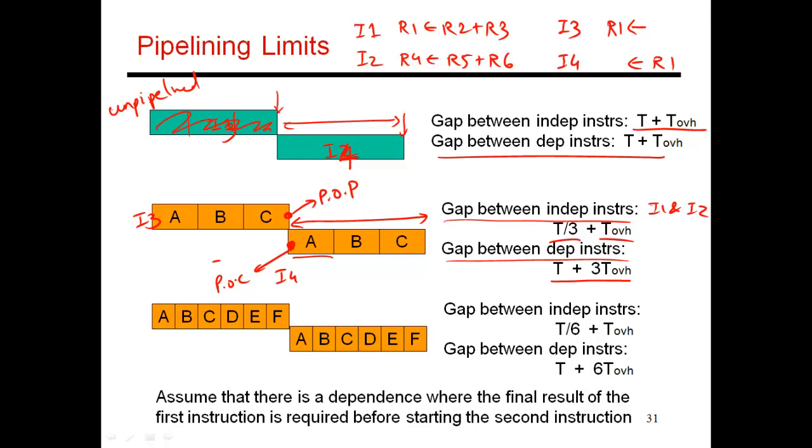becomes T plus 3 times T overhead. That is, you have to do all of the circuit work, plus you have to go through the latch overhead of each of these three stages. So in this case, I assume that the point of production happens at the very end of an instruction, and the point of consumption happens at the very start. If you were to change this, if this was the point of production and this was the point of consumption, you would have a different set of equations. But you would still see this number kind of increasing because of all the intermediate pipeline stages and their latch overheads. So if I were to continue this example and go to a six stage pipeline, I would come up with these equations.